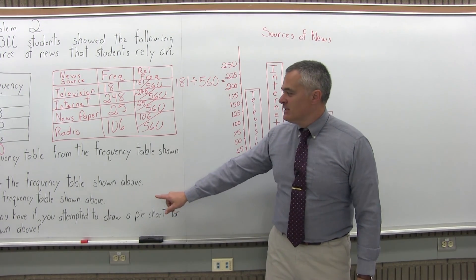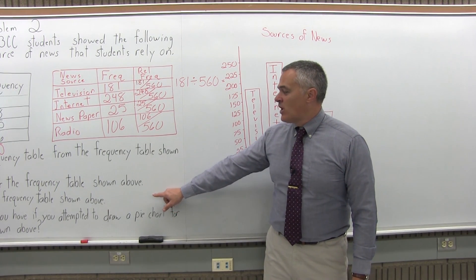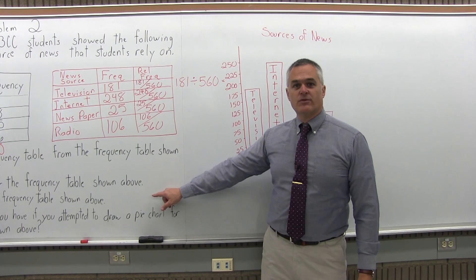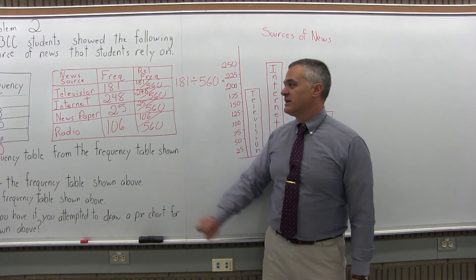We can certainly label it — it's nice for your bar graph to have a title: Sources of News. That's the answer to Part B, which asked to draw a bar graph for the frequency table. Now Part C says draw a Pareto chart for the frequency table that was given.